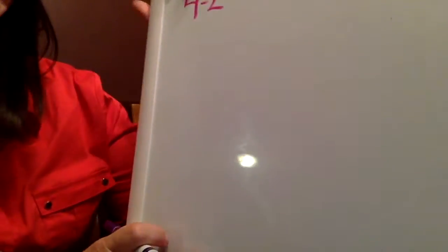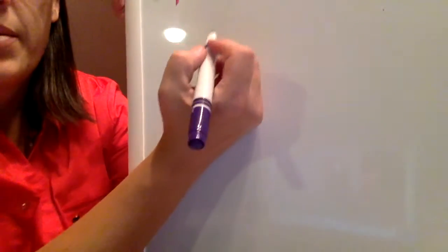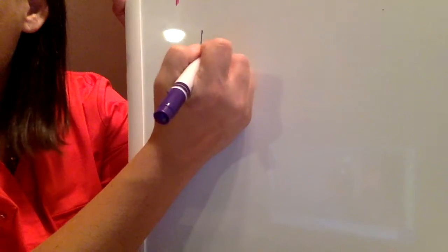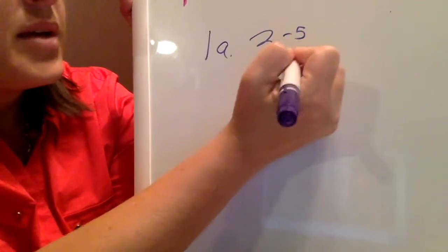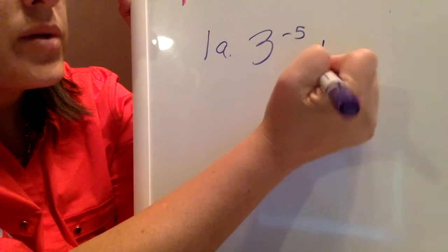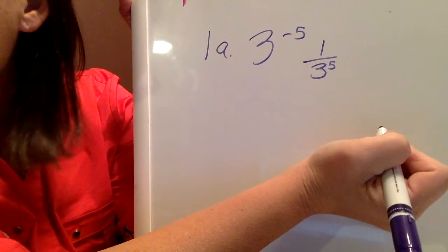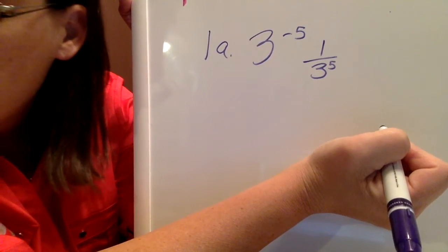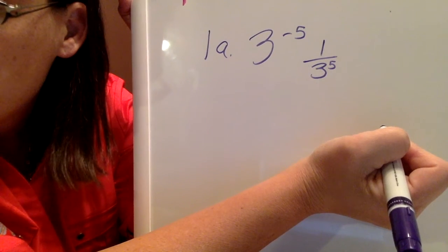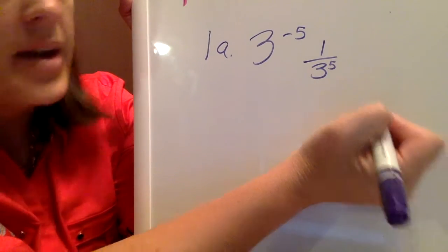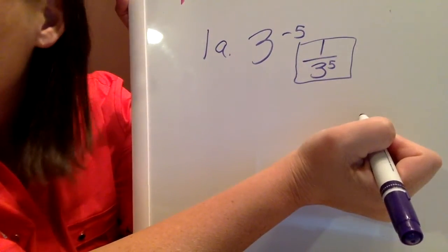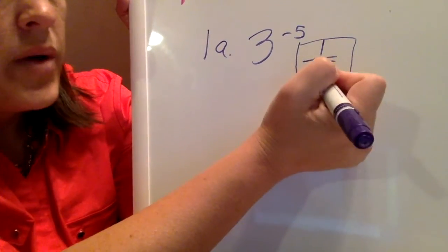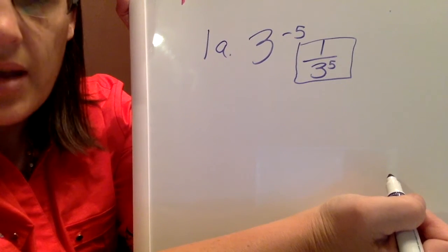For example 1, it just has more of the same types of problems that we were just doing. So 1a is 3 to the negative 5. That becomes 1 over 3 to the positive 5. And this example says to write each expression using a positive exponent. So this would in fact be your answer. If it said to simplify, then we would go ahead and take 3 to the 5th power and write that answer.